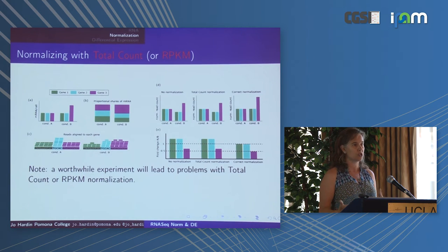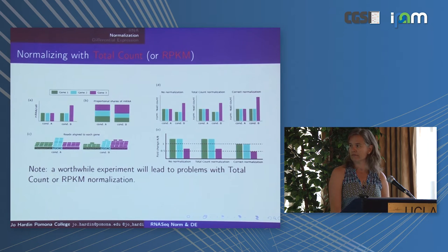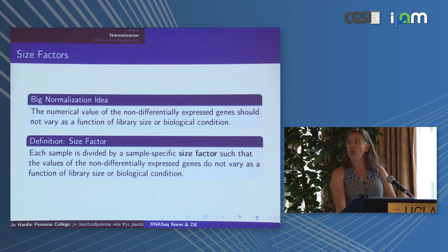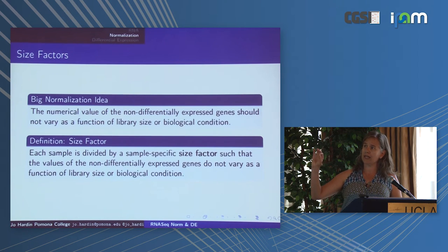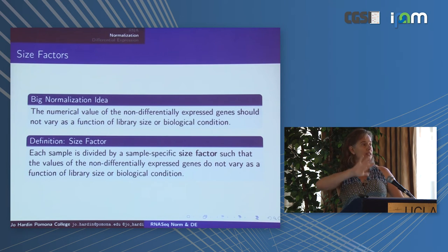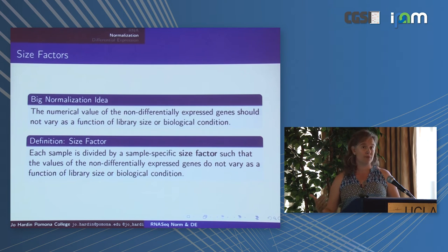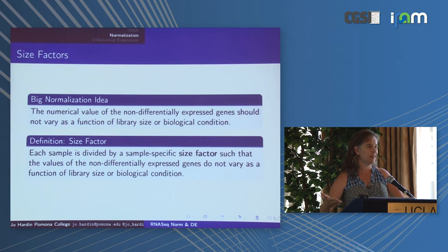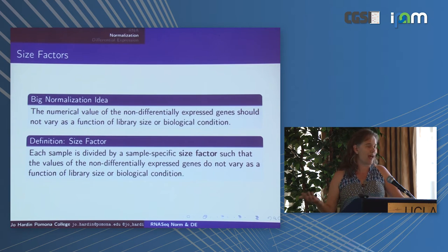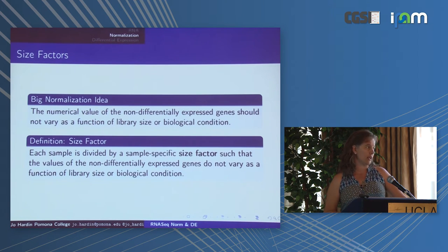The big idea: we want to compare condition A with condition B on a biological front, not let library sizes play a role. If a gene is not differentially expressed, it shouldn't vary as a function of library size or biological condition. There will be other sources of variation between samples, but non-DE genes shouldn't vary as a function of biological condition or library size.